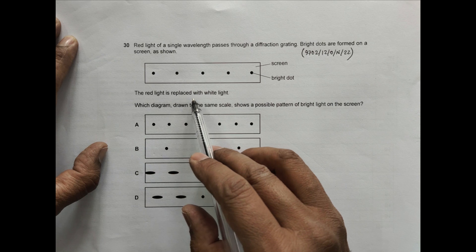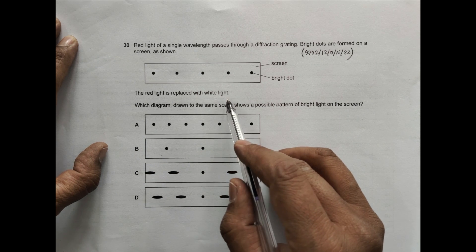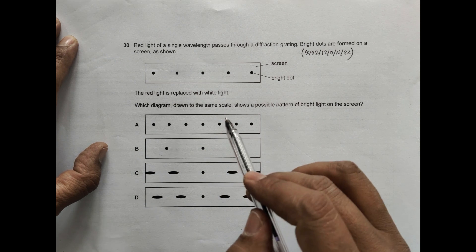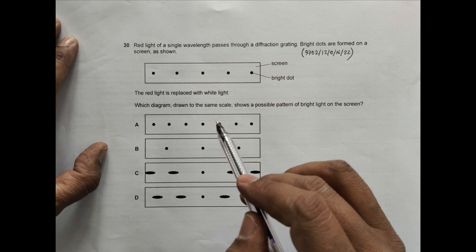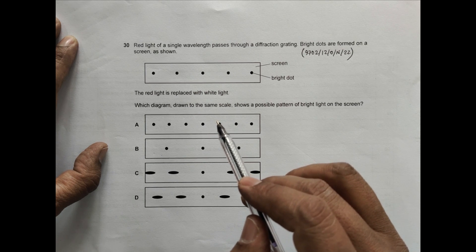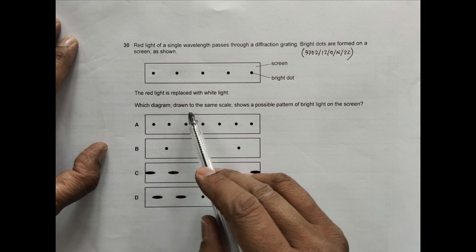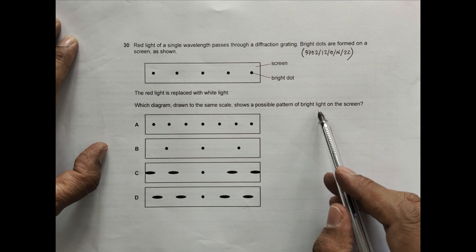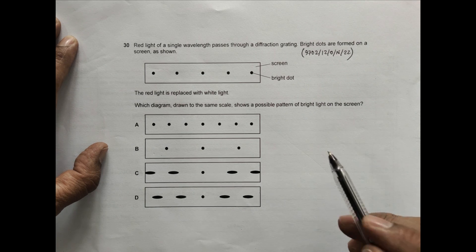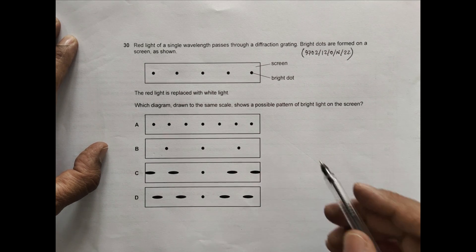Now the red light is replaced with white light. White light means composite light, which is combined light. It has got all the colors from violet to red. Which diagram drawn to the same scale shows a possible pattern of bright light on the screen?